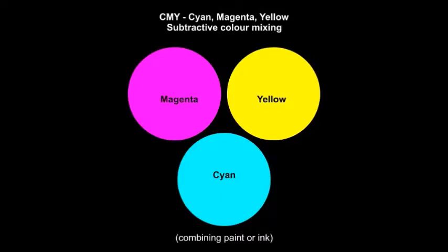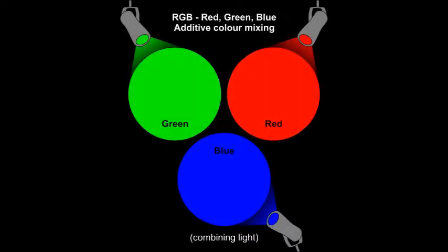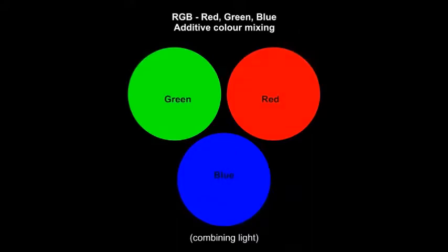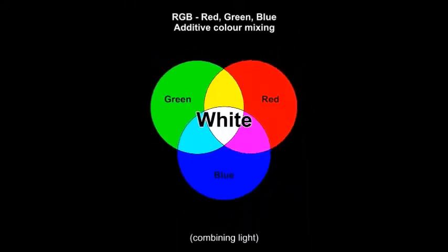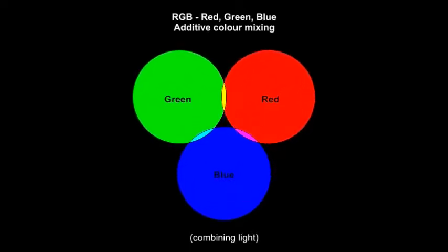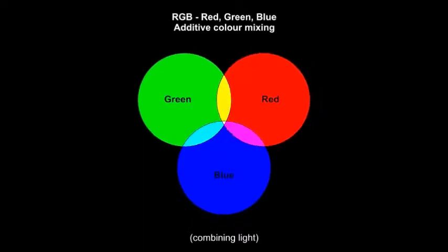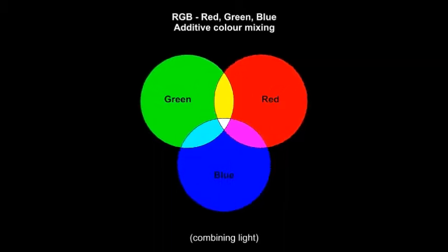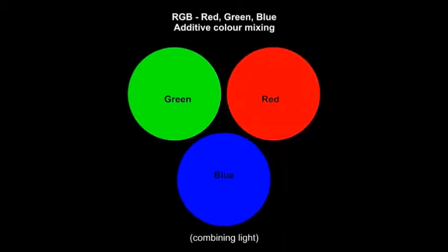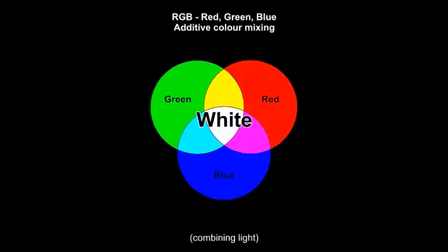We can also see colors that have not first been reflected from objects. We can combine different colors of light directly. For example, bright colored lights are often used in stage design. When we are mixing light, we are seeing absorbed color and additive color mixing. It is called additive color mixing because we see more light and lighter colors with each addition of a different hue.